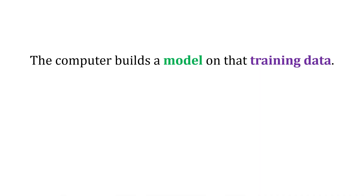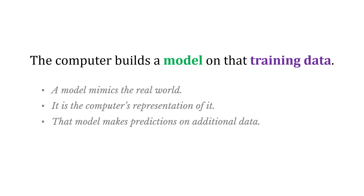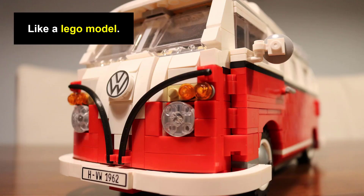The computer builds what's called a model on that training data when it performs this process. A model is something that mimics the real world — it's the computer's representation of it — and that model makes predictions on additional data. You can think of this like a Lego model: it's not perfect, it's not exactly like the real car, but we try to get it as close as possible.